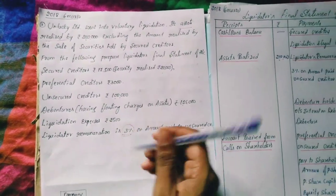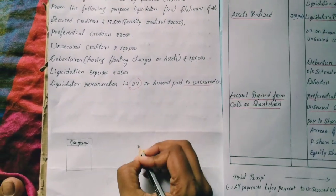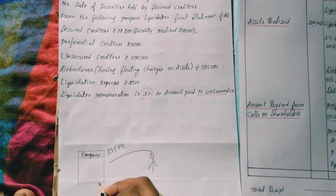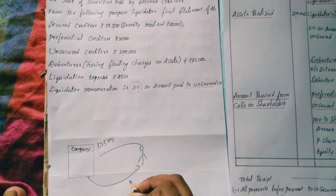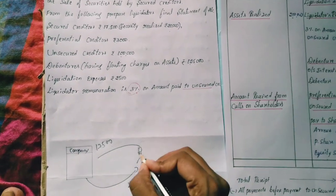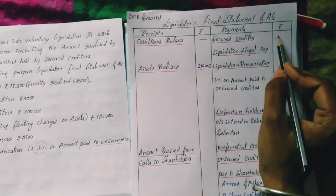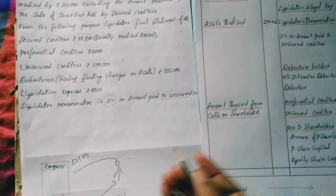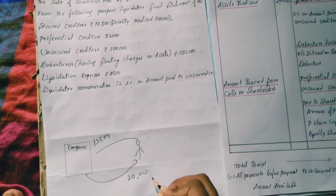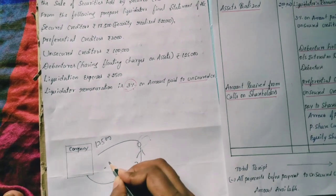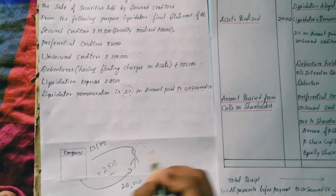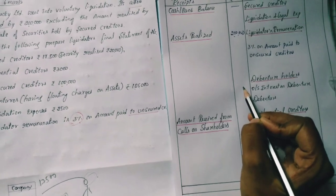Looking at the record: secured creditor is Rs.17,500. The asset realized is Rs.20,000. So we pay Rs.17,500 to the secured creditor. Since the asset realized (Rs.20,000) is more than what is owed (Rs.17,500), there is a surplus.